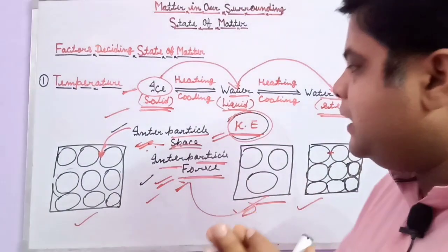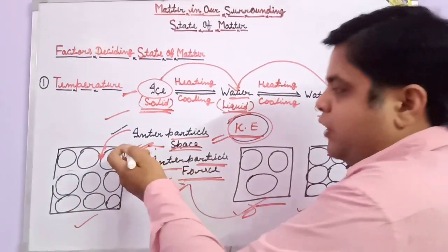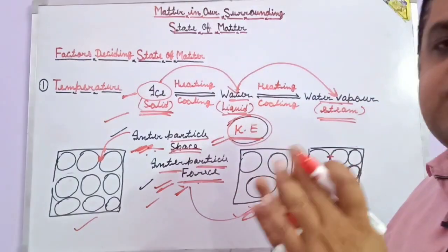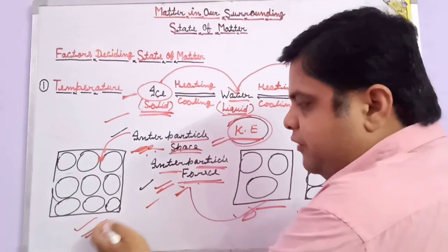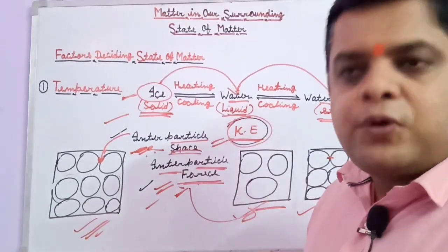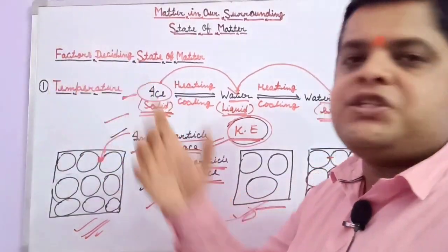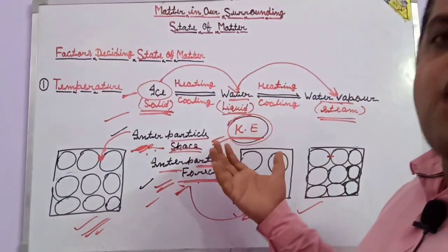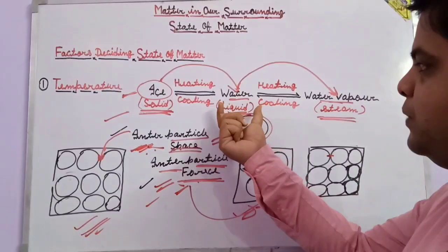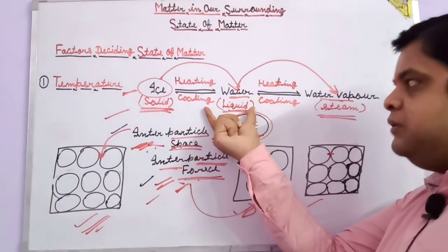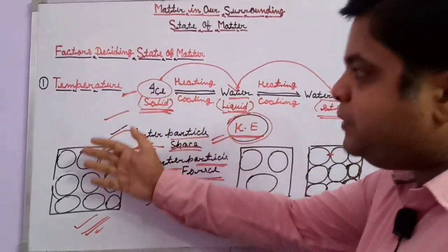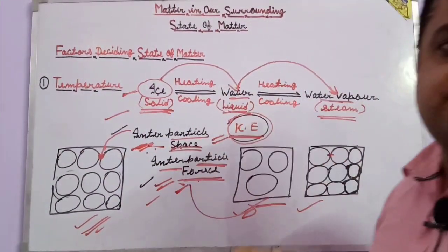In the case of liquid, the inter-particle space is less compared to gas, and the inter-particle force is less compared to solid. In the case of gas, the inter-particle space is very high and the attraction force is very less. All these conditions depend on temperature. By a change of temperature, different states are formed. Ice is in solid condition at very low temperature. Increase the temperature and it converts to liquid — water. Heat further and it forms steam.